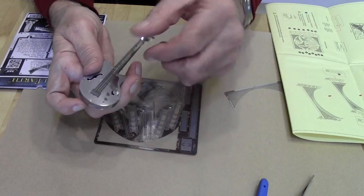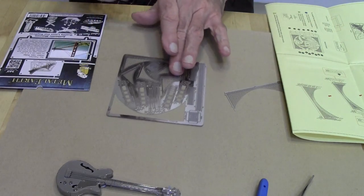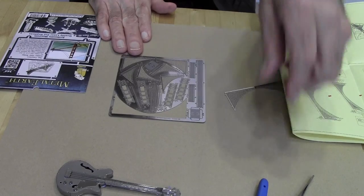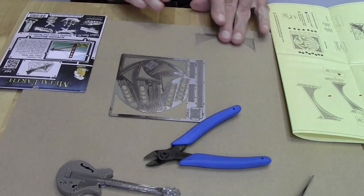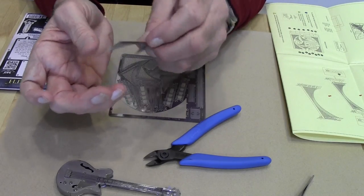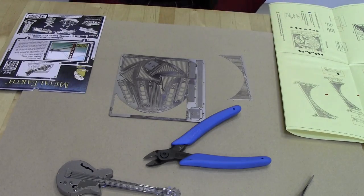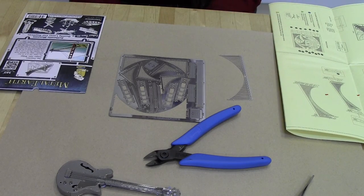Next, you're going to be cutting out pieces, and this is where the flush cutters come in. This piece has already been cut out and you can see it's perfectly straight, it's not bent or anything. That's what the flush cutters do for you.